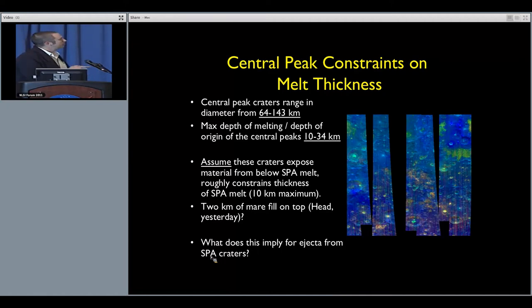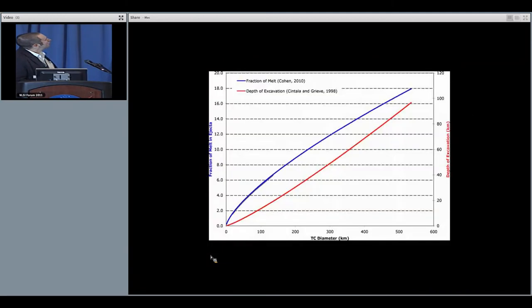We do have to keep in mind and consider the possibility of how much Cryptomare is on top of a possible melt sheet, as Jim talked about yesterday. Still, that's constraining about 10, maybe 12 kilometers of material and certainly enough material that could be redistributed by any of these craters. What does it imply for all of these small craters in the interior of SPA? What are they redistributing?